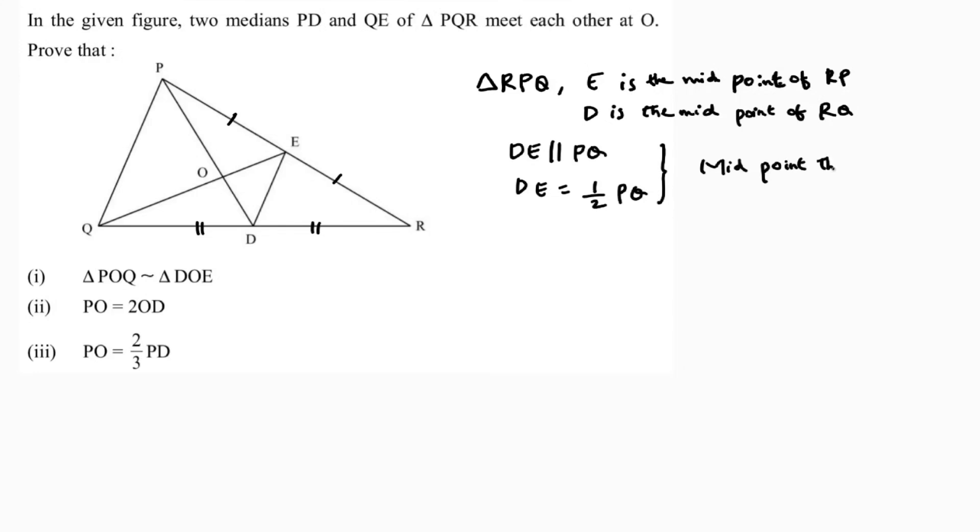The midpoint theorem states that a line through the midpoints of two sides is parallel to the third side and exactly half of it. Now as these lines are parallel, DE parallel to PQ, I'll prove triangle POQ is similar to triangle DOE.